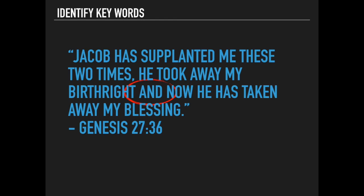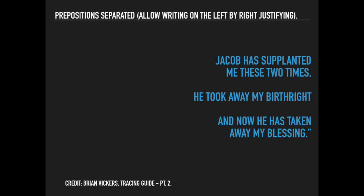So the idea is 'Jacob supplanted me these two times.' How do you explain it? What did he do? He took away my birthright, and now he has taken away my blessing. So you should have three different propositions there: 'Jacob supplanted me these two times. He took away my birthright, and now he has taken away my blessing.'